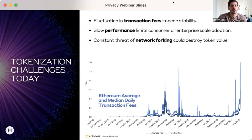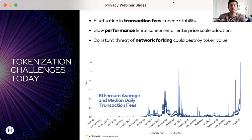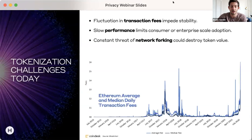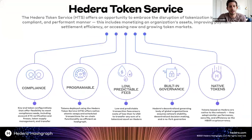Some challenges in tokenization today include fluctuation in transaction fees. On Ethereum and similar networks, an overload of users causes fees to skyrocket. There's slow performance on many networks, especially proof-of-work ones. There's also the threat of network forks — if the community's governance decides to go in different directions, the network splits. If you've built NFTs or tokens on the network, application developers have to choose which fork to follow, resulting in two NFTs existing simultaneously, which gets complicated. Hedera overcomes these challenges through the Hedera Token Service.